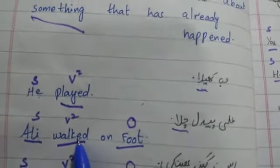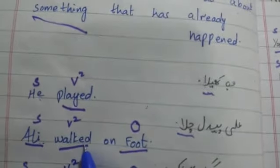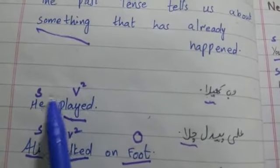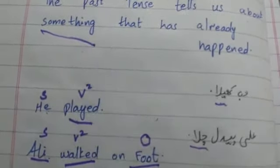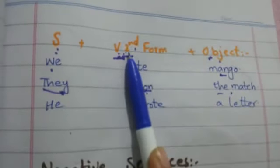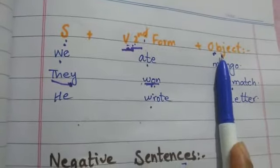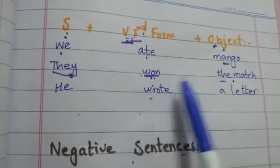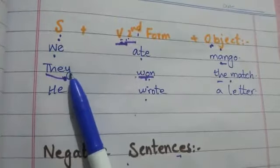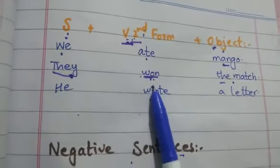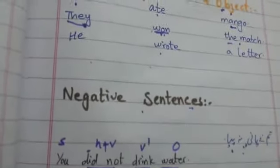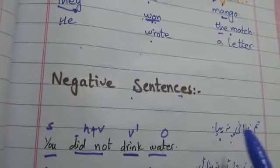Past tense بنانے کے لئے ہم پہلے subject لکھتے ہیں، پھر verb کی second form use کرتے ہیں، اور اس کے بعد object لکھتے ہیں۔ جیسے: 'We ate mango,' 'They won the match۔' دیکھیں — 'they' subject ہے، 'won' second form ہے، اور 'the match' object ہے۔ جب ہم نے negative بنانا ہو تو اس میں 'not' use کرنا ہے۔